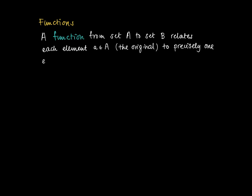A function from set A to set B relates each element a in A to precisely one element f(a) in B. And this f(a) is called the image of a under f.